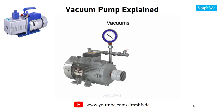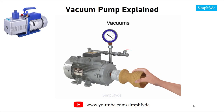Additionally, vacuum chucking is a commonly used method to hold work pieces in place without the risk of damaging their surface. In this application, a piece of wood is held to a lathe so that it can be turned. New applications for the use of vacuum power will continue to grow as technology advances.